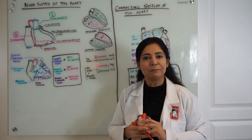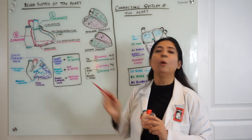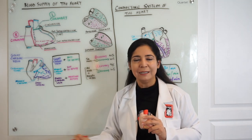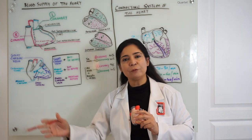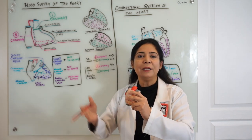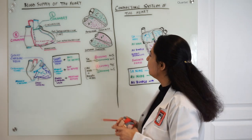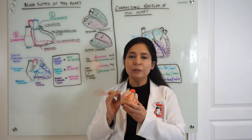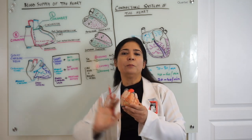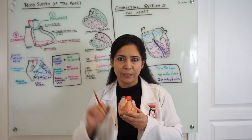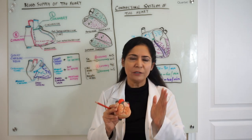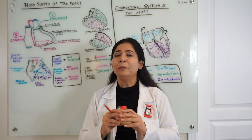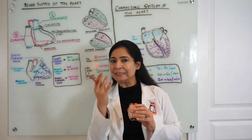The interventricular septum is irrigated by branches of both arteries — both right and left coronary arteries participate in its supply. Regarding the atria, the anterior wall of the right atrium is supplied by the right coronary artery, the posterior wall by the left coronary artery; the same pattern applies to the left atrium, though it can vary. Our main concern is the conducting system.